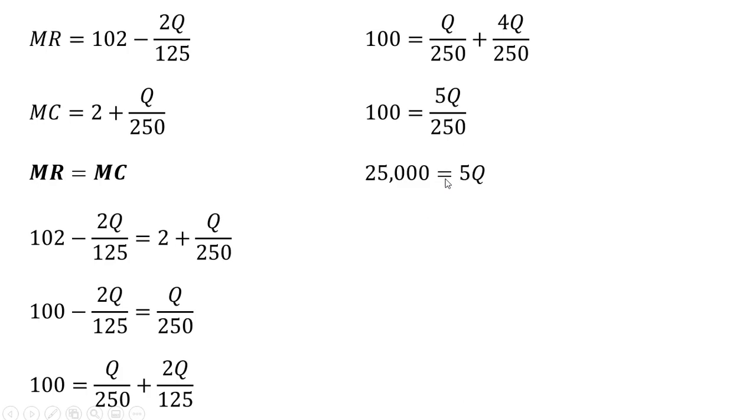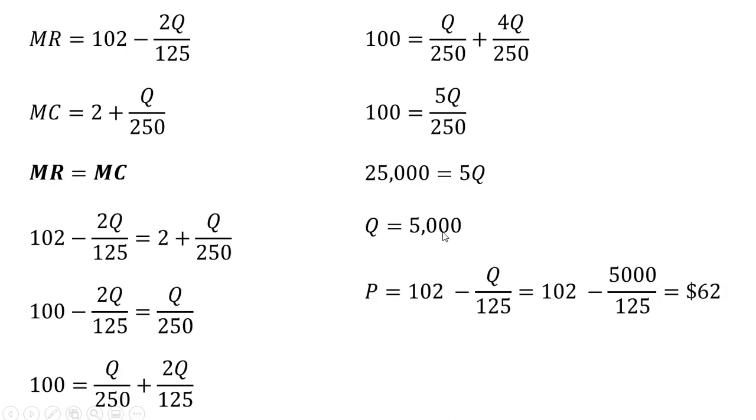Multiplying through by 250 and dividing through by 5, the firm's profit maximizing output is 5,000 units. To get the price, we'll plug this 5,000 units into the inverse market demand, and we get a price of $62.